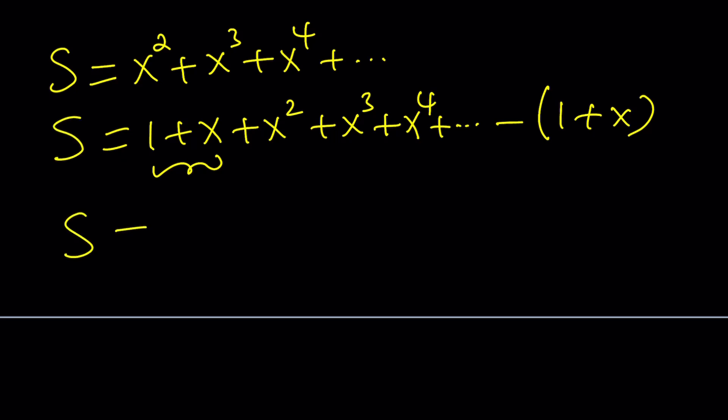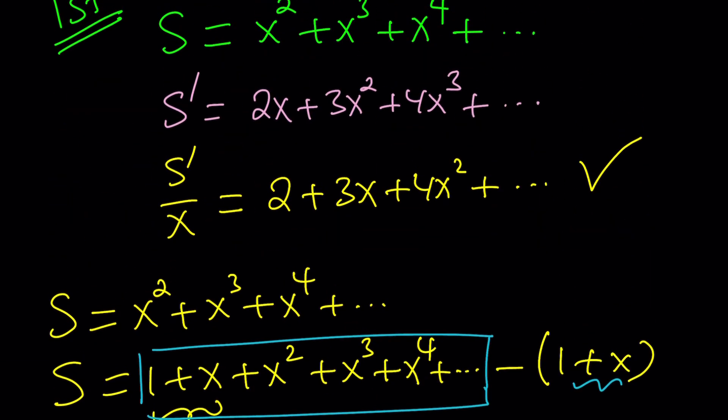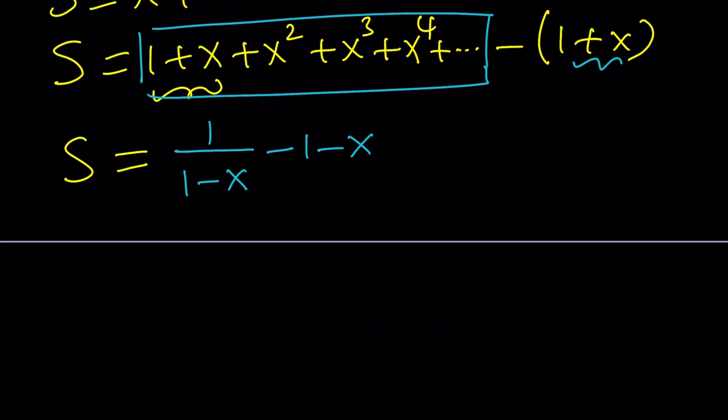So S can be given as follows. How do you find this sum, the infinite geometric series? There is a formula, and that is 1 over 1 minus x. From this, we need to subtract 1 plus x, which is equivalent to minus 1 minus x. You can write this in so many different ways, but this is what S is going to look like. But remember what we're supposed to do. To find our sum, we need to differentiate S and divide by x. So those are the two steps we're going to take.